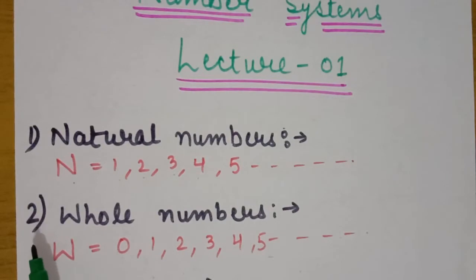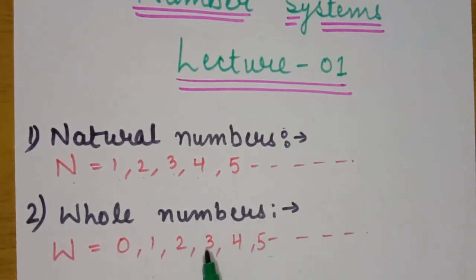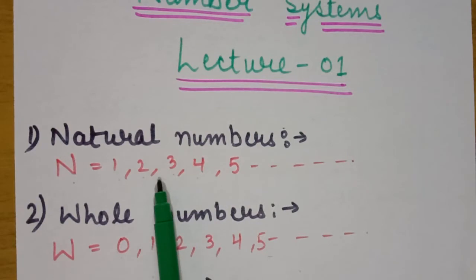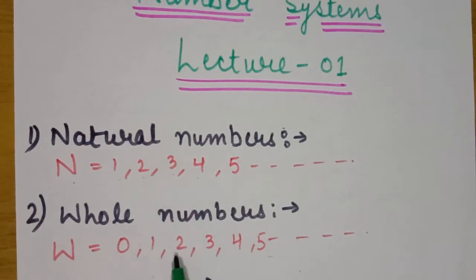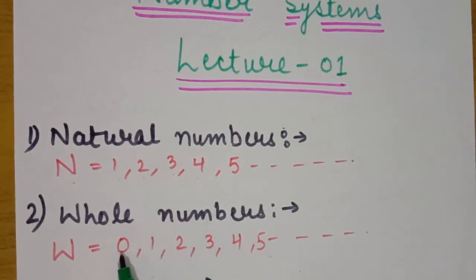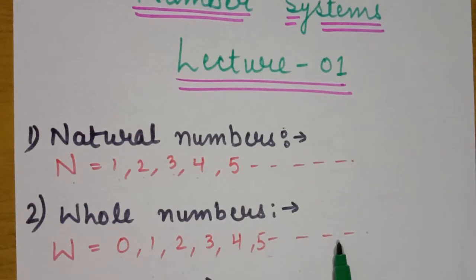Second is whole numbers. Whole numbers are 0, 1, 2, 3, 4, 5 and so on. The definition of whole numbers is: when we include 0 with all natural numbers, they become whole numbers. Whole numbers are those numbers which include 0 and all natural numbers. We denote whole numbers with capital W. Whole numbers start with 0 and go to infinity.